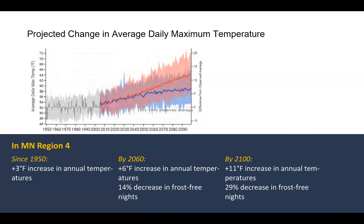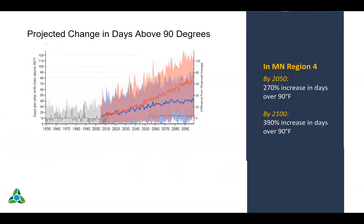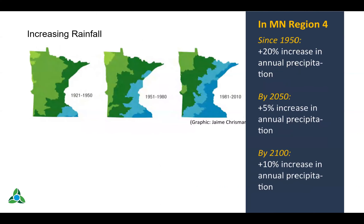This is the future that may be — to use the Christmas Carol analogy — only if we don't abate. By the end of the century, if we don't abate, we could be around plus 11 or 12 degrees Fahrenheit average temperature. Increasing temperatures also relate to increasing extreme heat days. By 2050 we can anticipate the region may have a 270% increase in days over 90 degrees Fahrenheit. By the end of the century, that could be roughly a four-time increase or more.